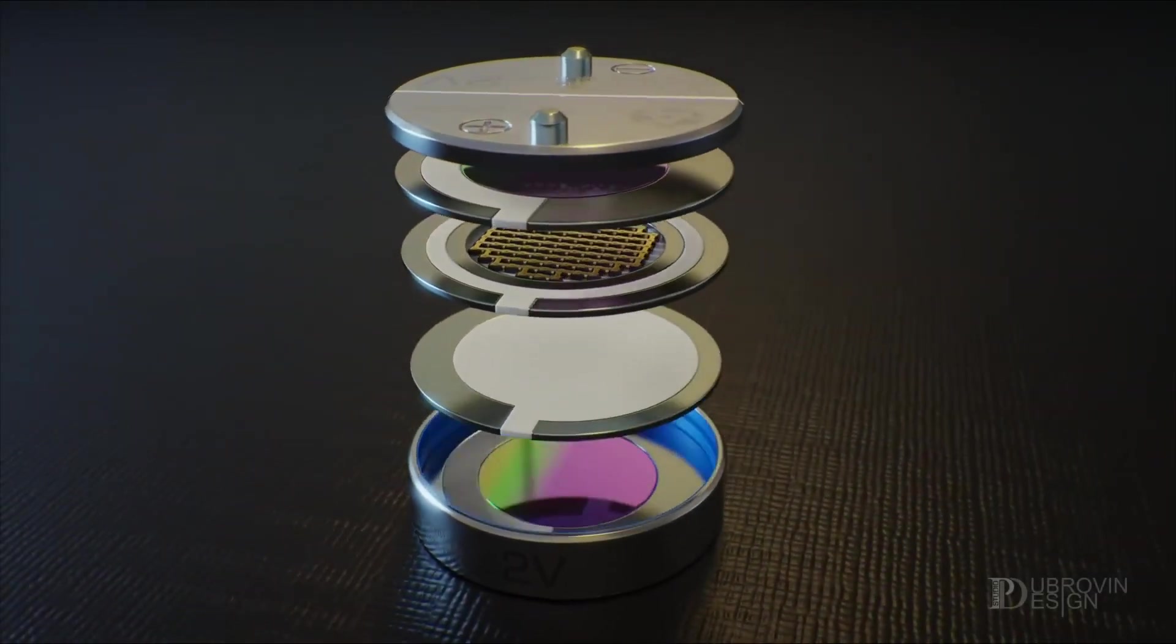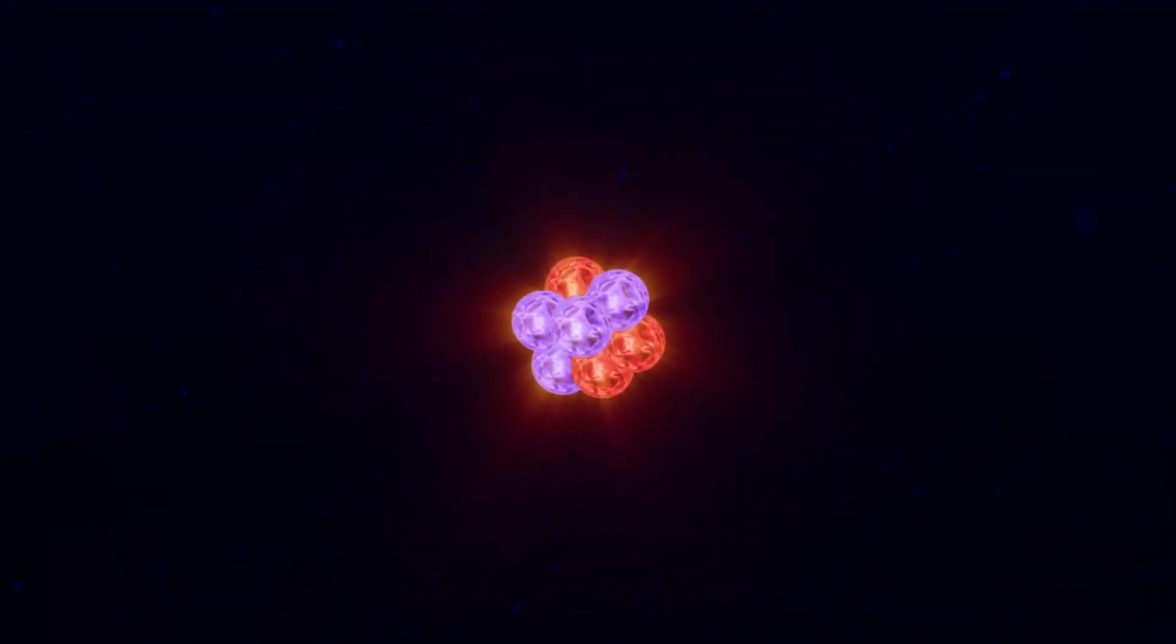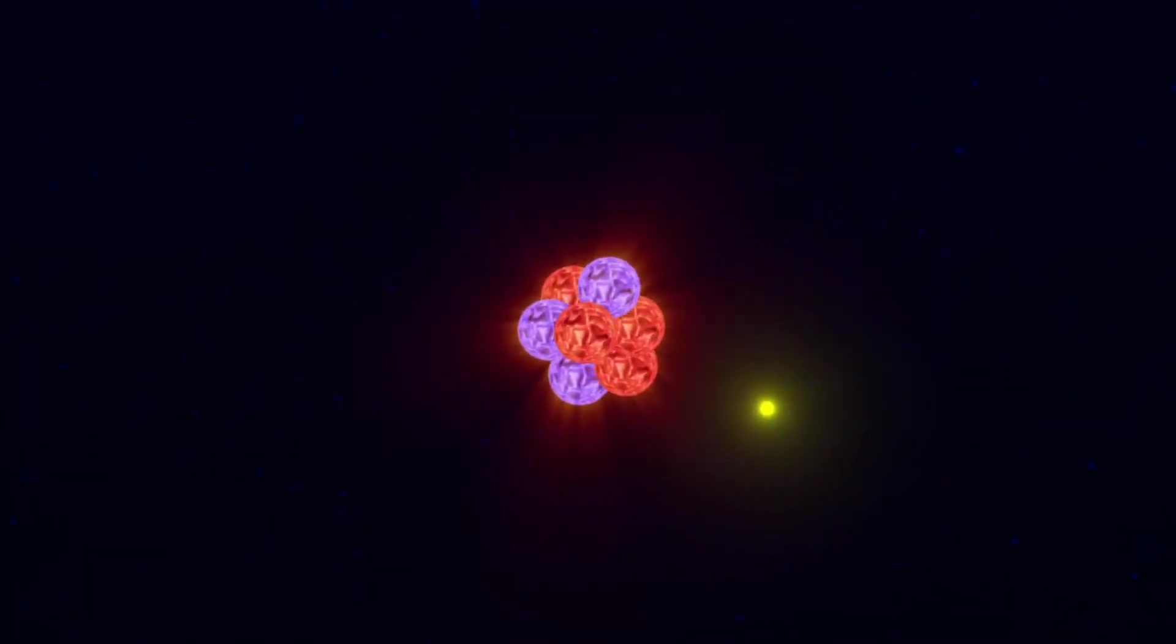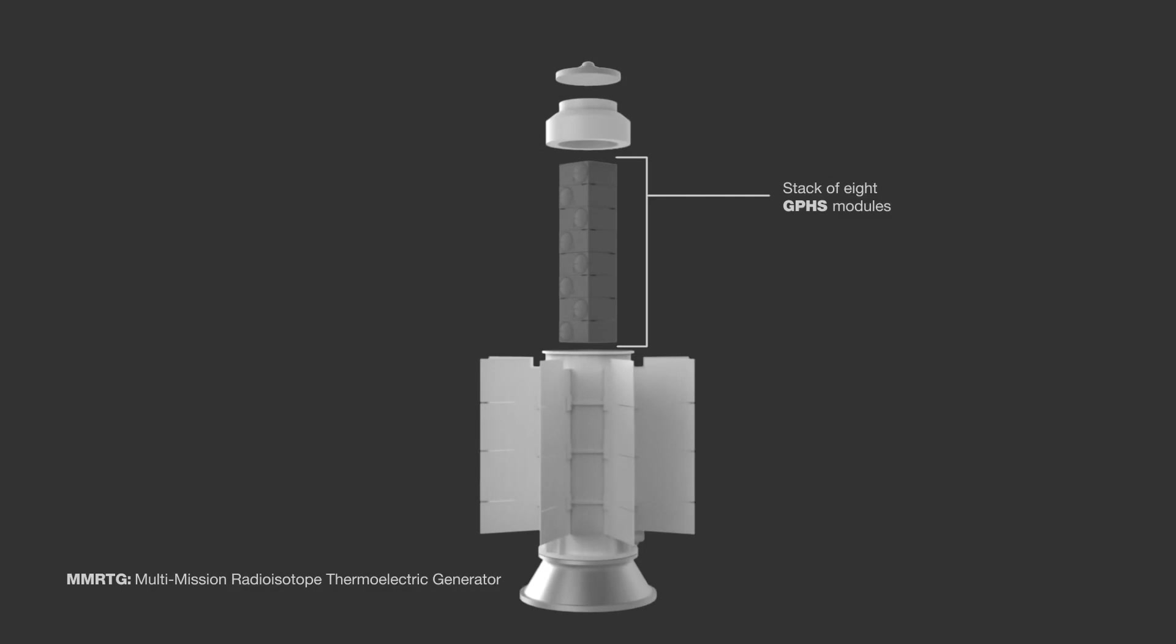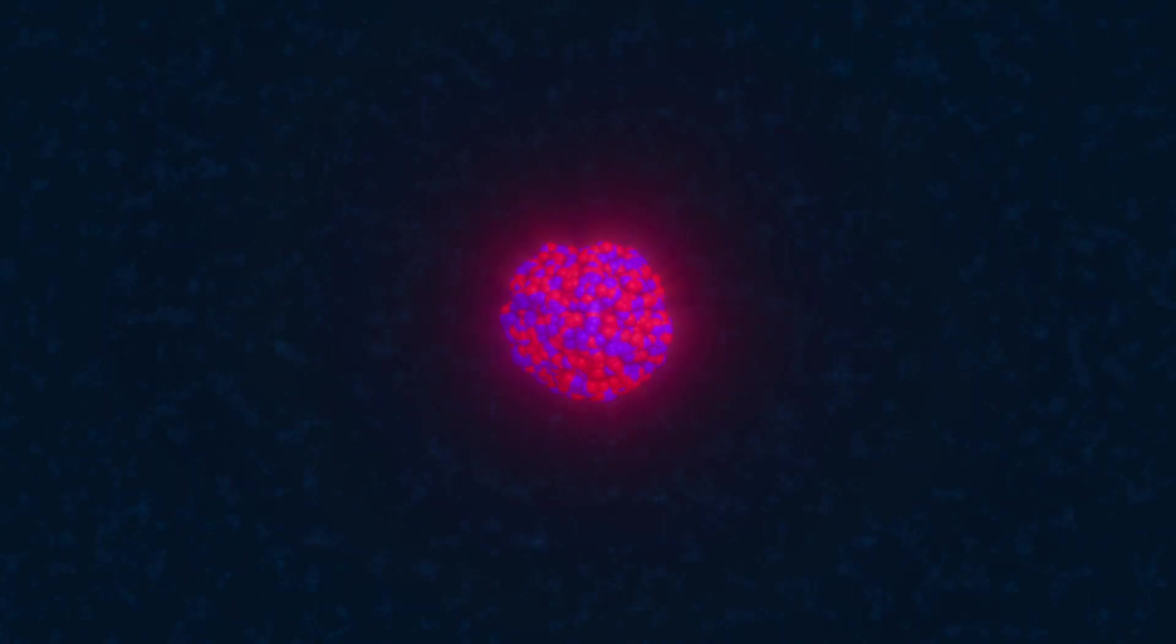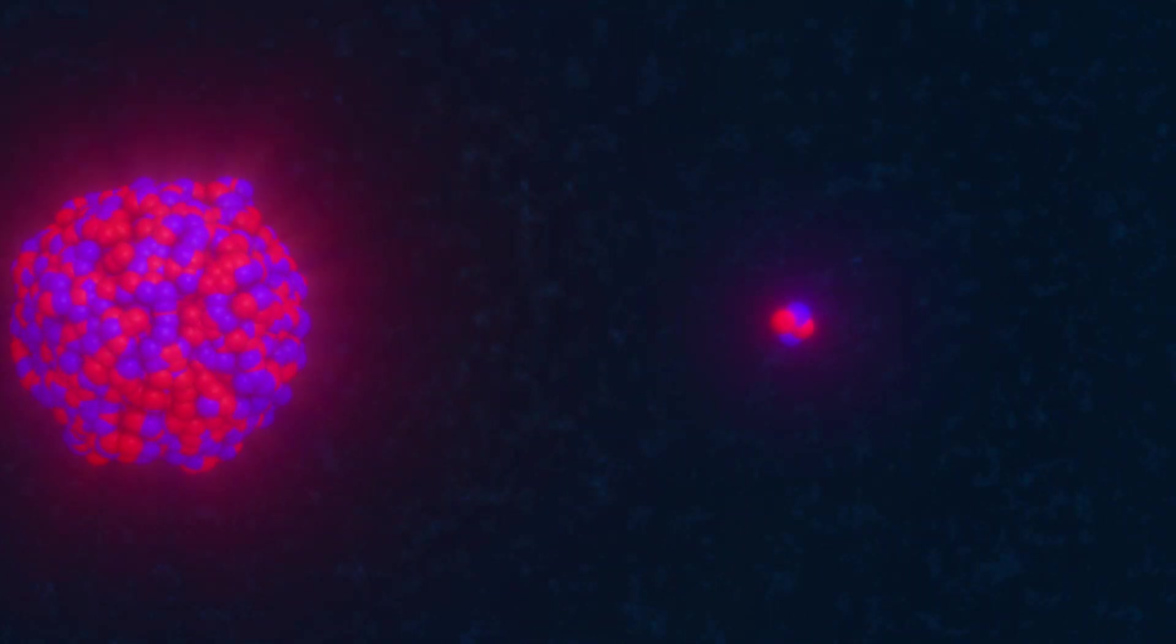Unlike beta-voltaic elements, which utilize beta-radioactive isotopes emitting rapidly moving electrons, RTGs and related devices harness the energy of another process, alpha decay, in which massive nuclei effectively eject alpha particles, essentially helium atom nuclei consisting of two protons and two neutrons.